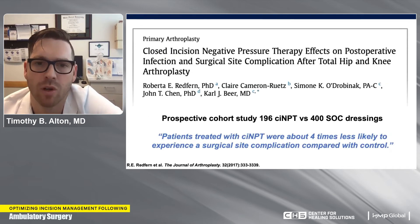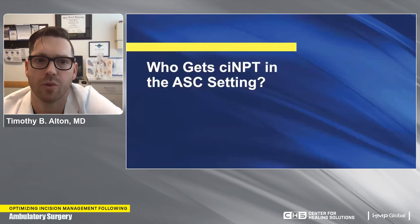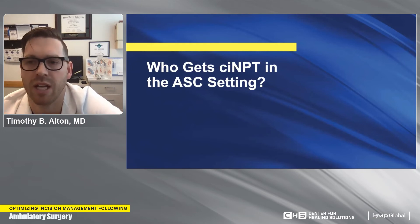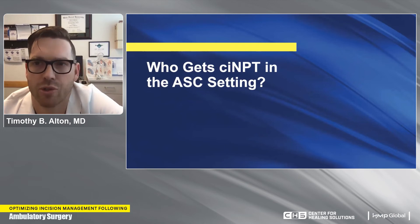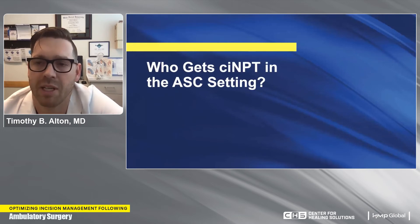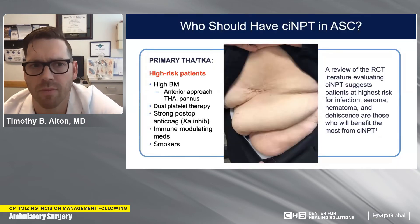An additional prospective cohort study of almost 200 patients with negative pressure compared to 400 standard of care patients showed that patients treated with negative pressure were four times less likely to experience a surgical site complication compared to controls. Much of this clinical evidence is in high-risk patients — those having revision surgery or periprosthetic fracture surgery — but that's not really the primary ambulatory setting population. The primary hip and knee replacement patients are who we're sending to the ASC, so where does negative pressure fall in this discussion?